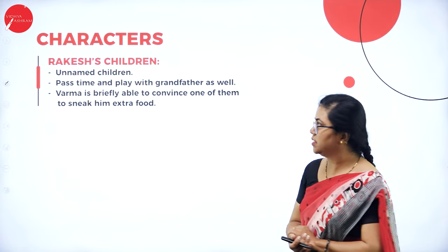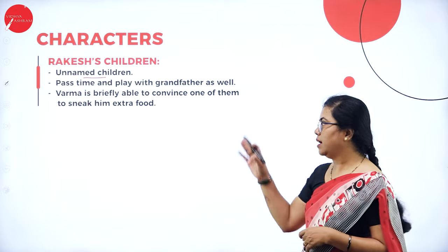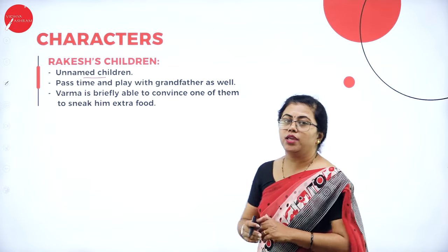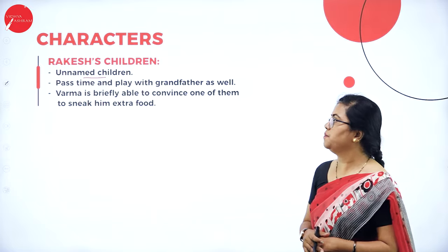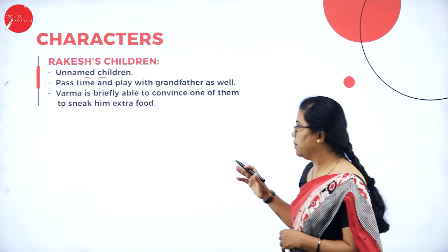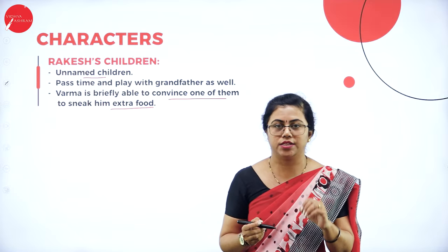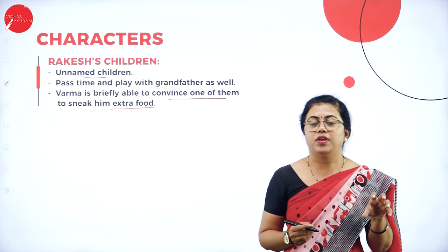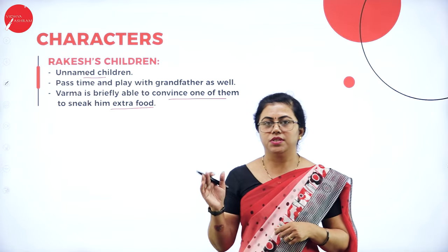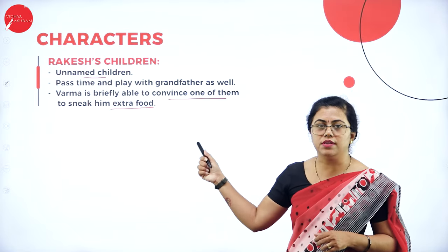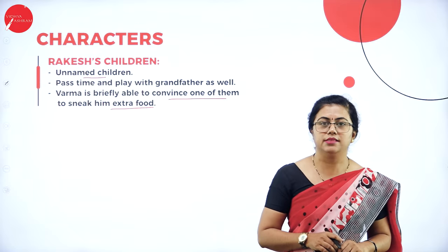Rakesh's children are unnamed in this story and are minor characters, appearing only in one or two places. They had a cordial relationship with Rakesh's father — their grandfather. Mr. Varma was able to convince one of these grandchildren to bring him some extra food, since he was not allowed to have extra food or sweets when he was unwell, as Rakesh supervised his diet strictly.